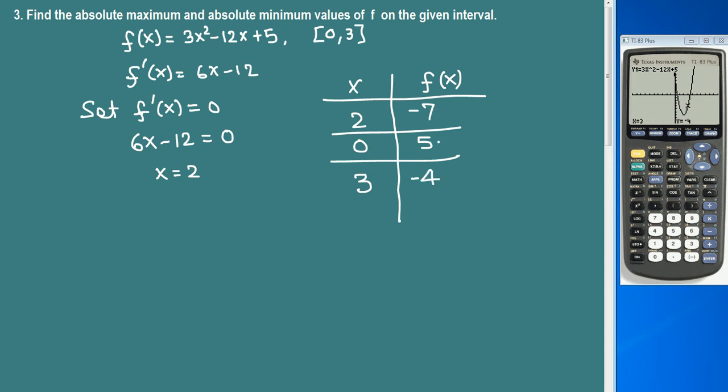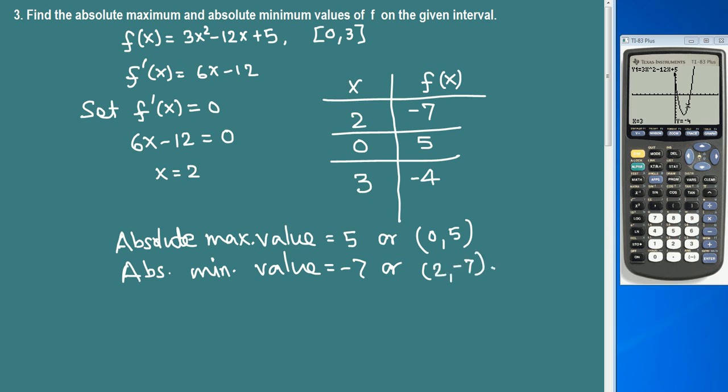Out of these three numbers, 5 is the largest, so that's the absolute max value: 5, or we can write down the location and the value (0, 5). And absolute minimum value, the smallest one, negative 7, or the location is (2, -7). Final.